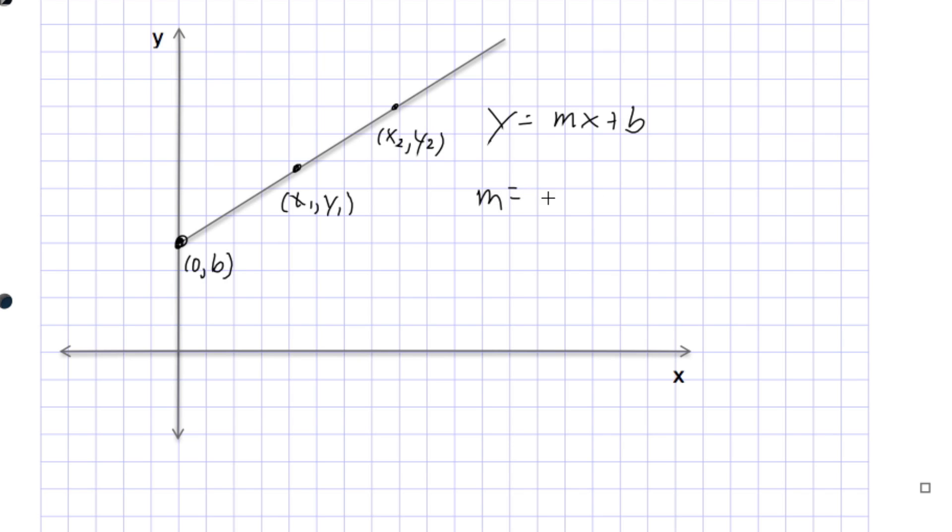of course, is by taking the rise over the run. The rise is y2 minus y1, and the run is x2 minus x1, and that's how we calculate useful quantities for this line in algebra.